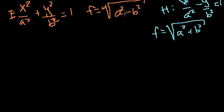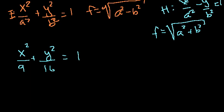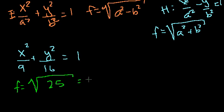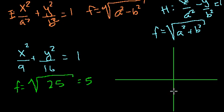So if I give you the hyperbola x² over 9 minus y² over 16 equals 1, the focal length is √(a² + b²). Here a² is 9 and b² is 16, so 9 plus 16 is 25, which gives a focal length of 5. Note: I accidentally wrote a plus earlier — that would have been an ellipse. A minus sign makes it a hyperbola.